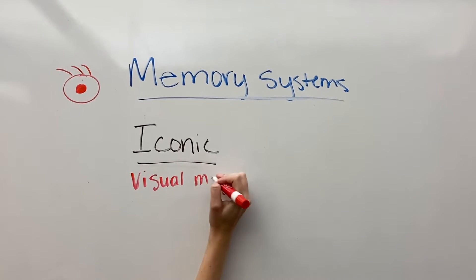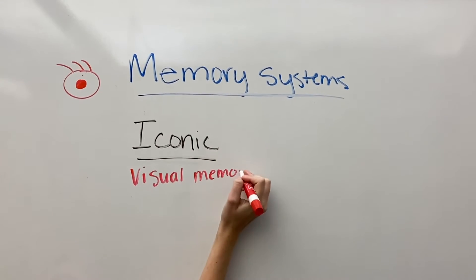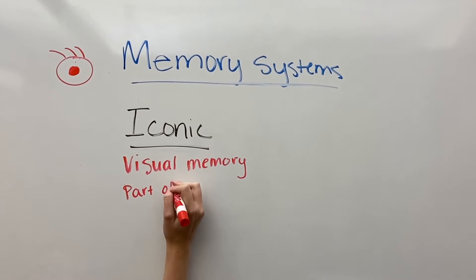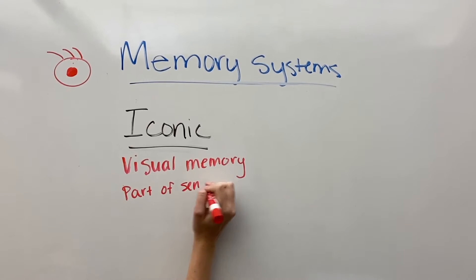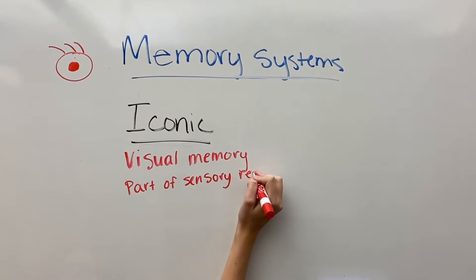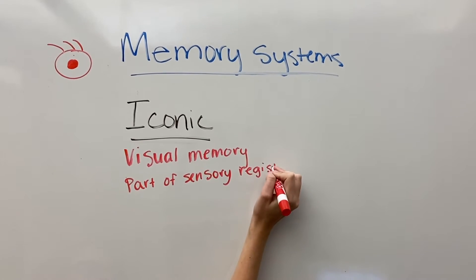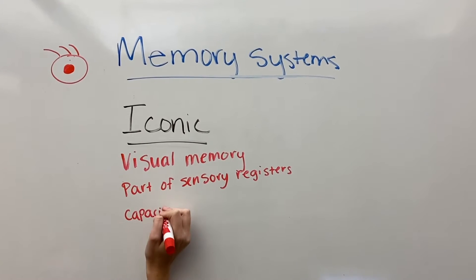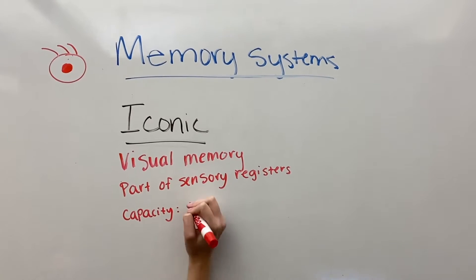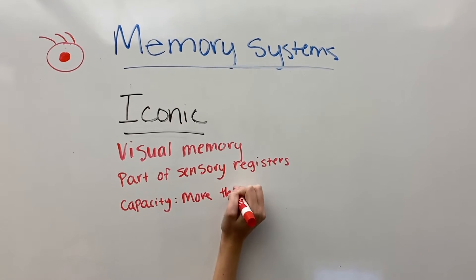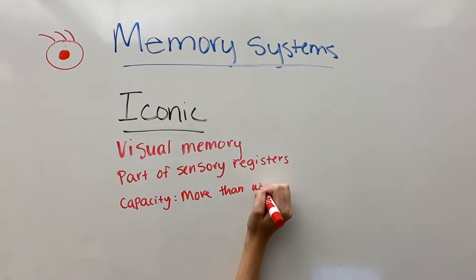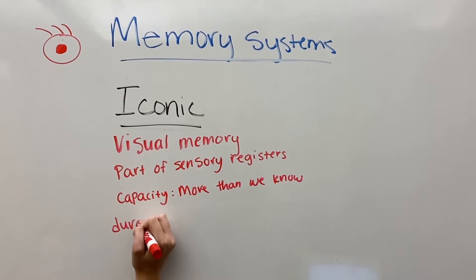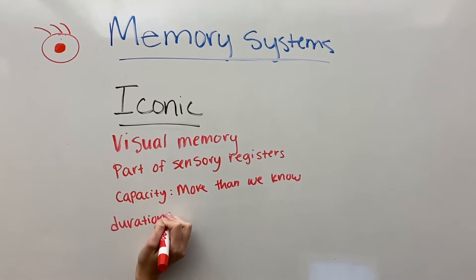Iconic memory is visual. It is also part of the sensory register, as is echoic. Our capacity for this is much more than we know, because everything our eyes see is within our capacity — we are just not able to recognize it all because of how much stimulation it actually requires.